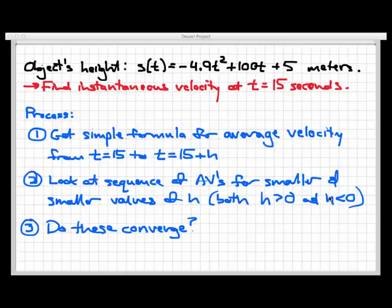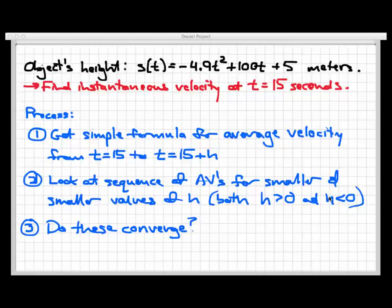So here's the process for how we're going to do this. First, we're going to get a simple formula for computing average velocities from time equals 15 to time equals 15 plus h, where h is some unspecified length of a time interval. Then we're going to use that simple average velocity formula to look at a sequence of average velocities over intervals that start at time equals 15 and last for shorter and shorter amounts of time. The philosophy is that the shorter the time interval, the closer to instantaneous the average velocity should get. We'll look at smaller and smaller values of h — both positive and negative. And then in part three, we'll simply observe what those average velocities do. If they converge towards a single value, then we'll call that the instantaneous velocity.